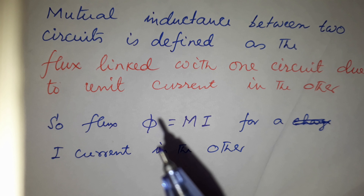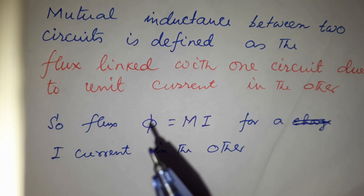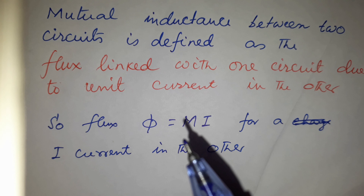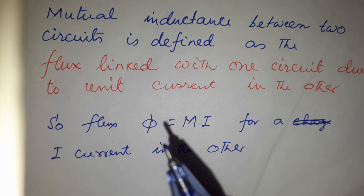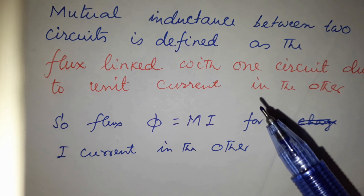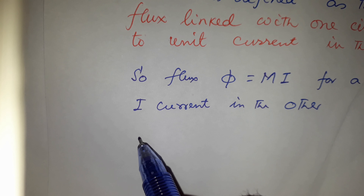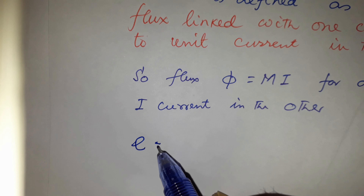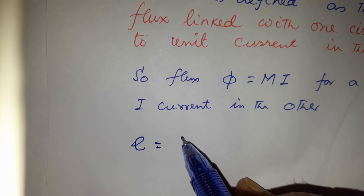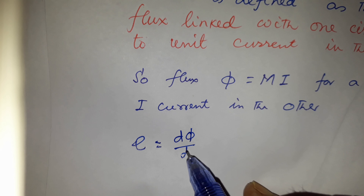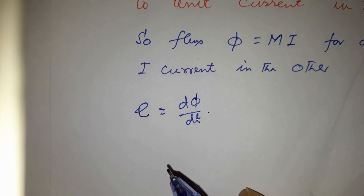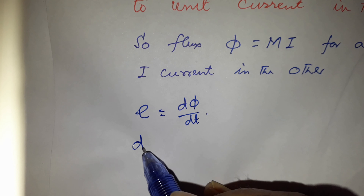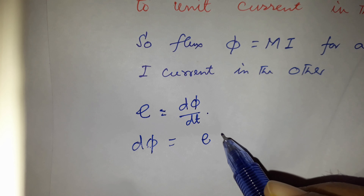A ballistic galvanometer measures charge, so we need a relation between flux and charge. From Faraday's law (Neumann's law), E equals dφ/dt (taking magnitude only). Therefore, dφ equals E dt. Integrating from time 0 to t, and dividing both sides by resistance R, we get phi/R equals the integral of I dt from 0 to t.